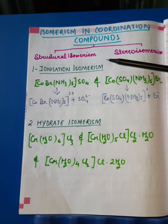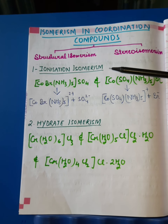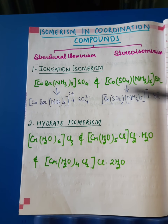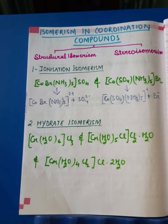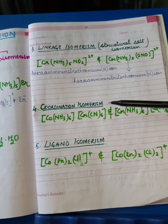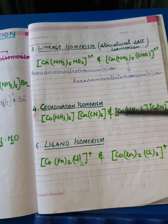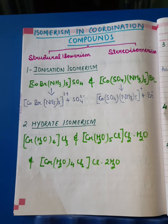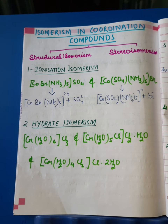The five types are: first, ionization isomerism; second, hydrate isomerism; third, linkage isomerism; fourth, coordination isomerism; and fifth, ligand isomerism. We will talk about them one by one, starting with ionization isomerism first.